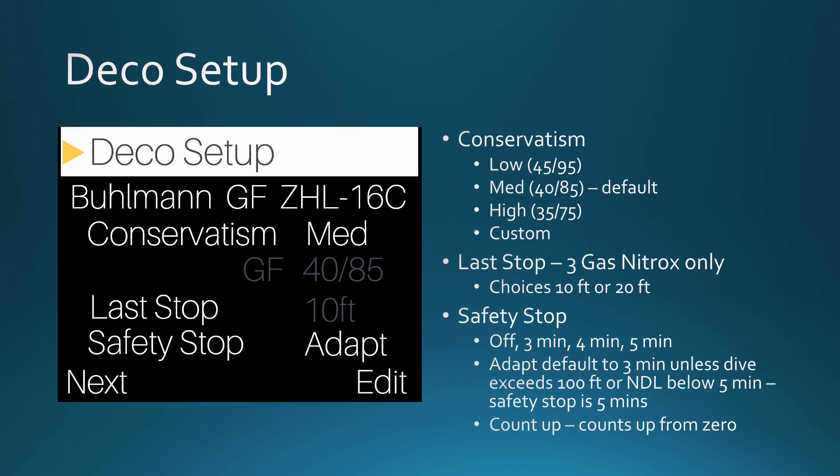Let's now move to the DECO setup. You'll see that this computer tells you the algorithm being used — in this case, the Buhlmann GF ZHL-16C. Should you want to change the conservatism setting on your computer, you get a choice between low, medium (which is the default), high, or custom. This setting changes the gradient factors, thus changing the no decompression limits. A detailed discussion on gradient factors is beyond the scope of this session, and if you choose the custom setting, you really need to have a full understanding of this adjustment. The last stop setting is only available for the three-gas nitrox mode and has two settings: 10 or 20 feet.